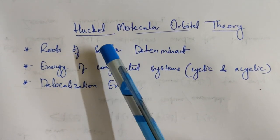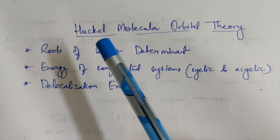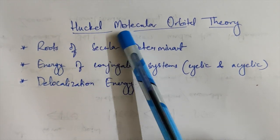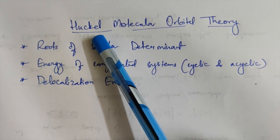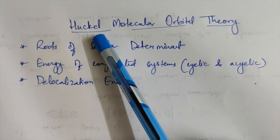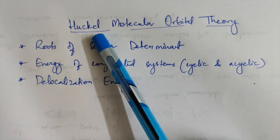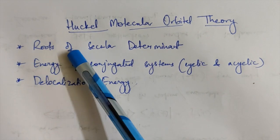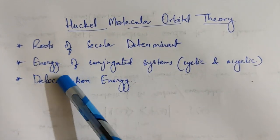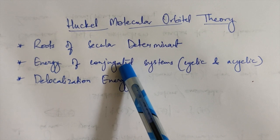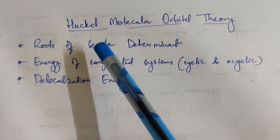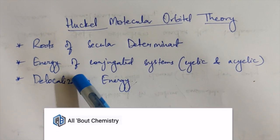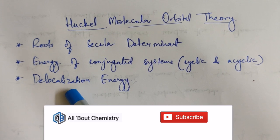This particular topic is one of the most important and easiest from quantum chemistry. Let's try to understand it — there are two ways, and I'll explain with the help of a trick. After this video, you'll be able to find the roots of the secular determinant, find the energy of a conjugated system, and also find delocalization energy. If time doesn't permit, I'll make a separate video on delocalization energy.